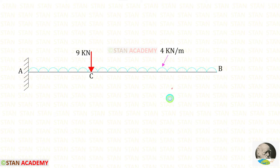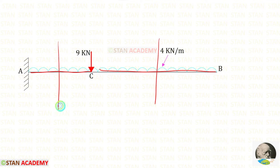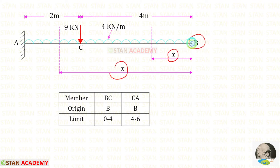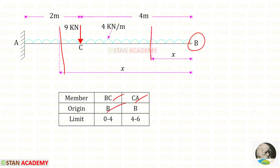In this beam there are two different parts: BC and CA, so we have to make two sections — one in BC and one in CA. Both sections are made at a distance X from point B, so the origin is B. The limit for the section in BC is 0 to 4, and for CA it is 4 to 6.